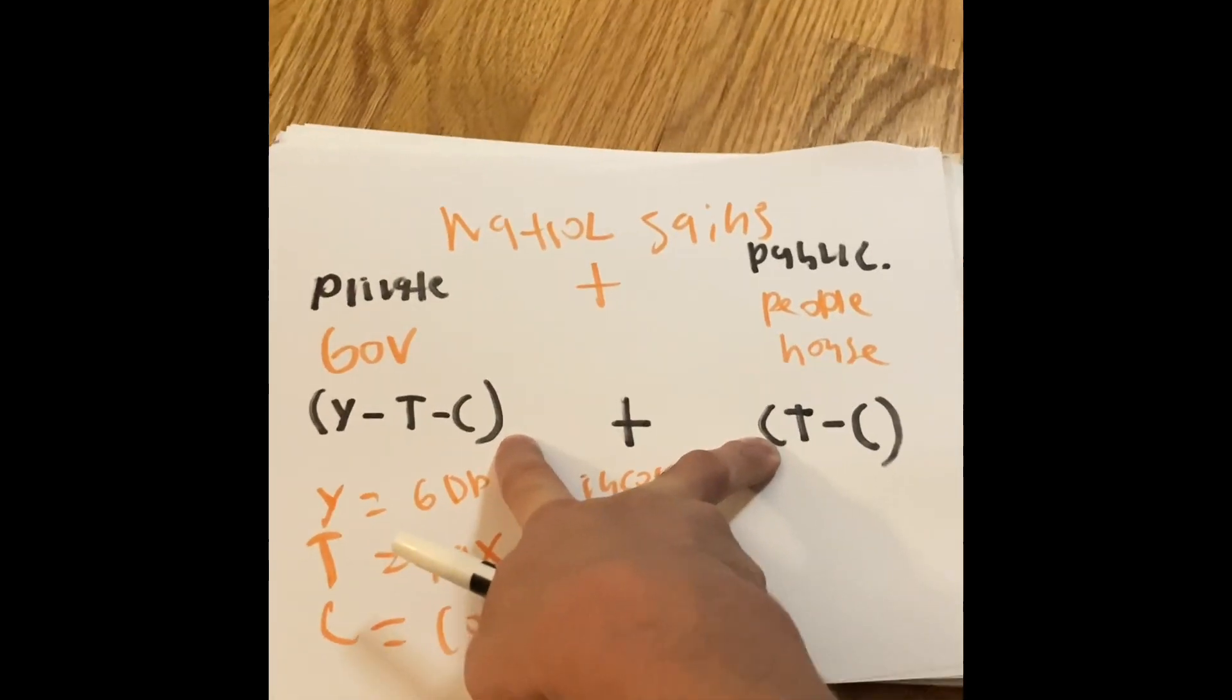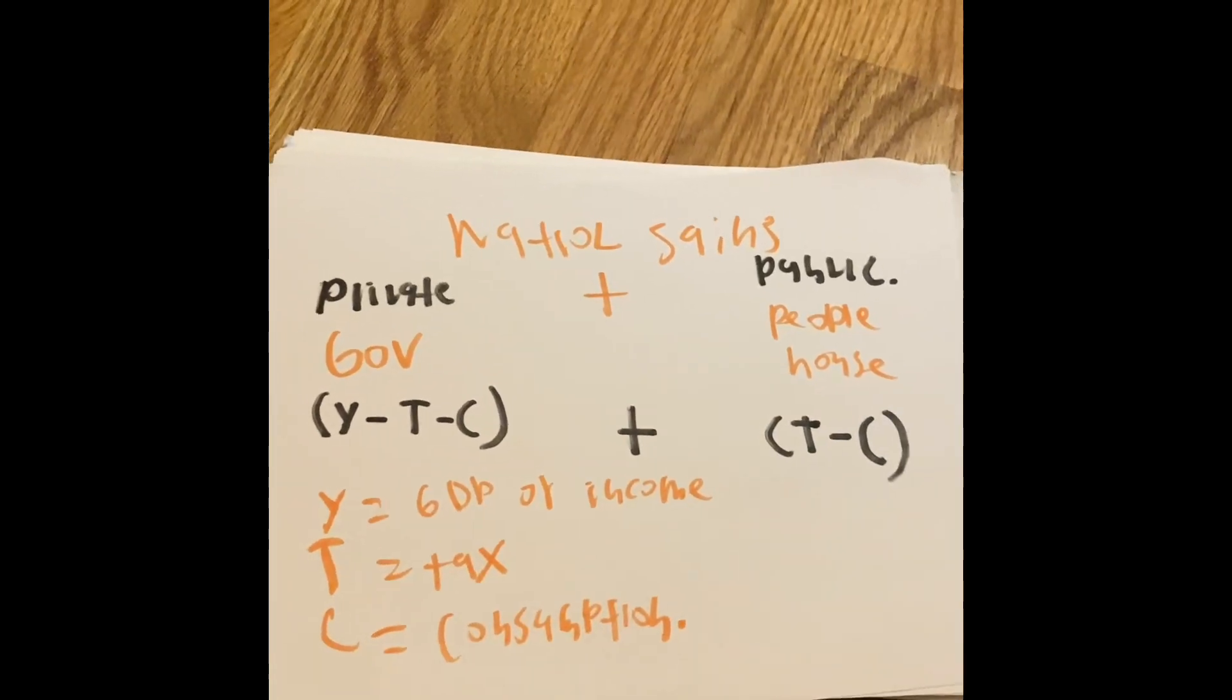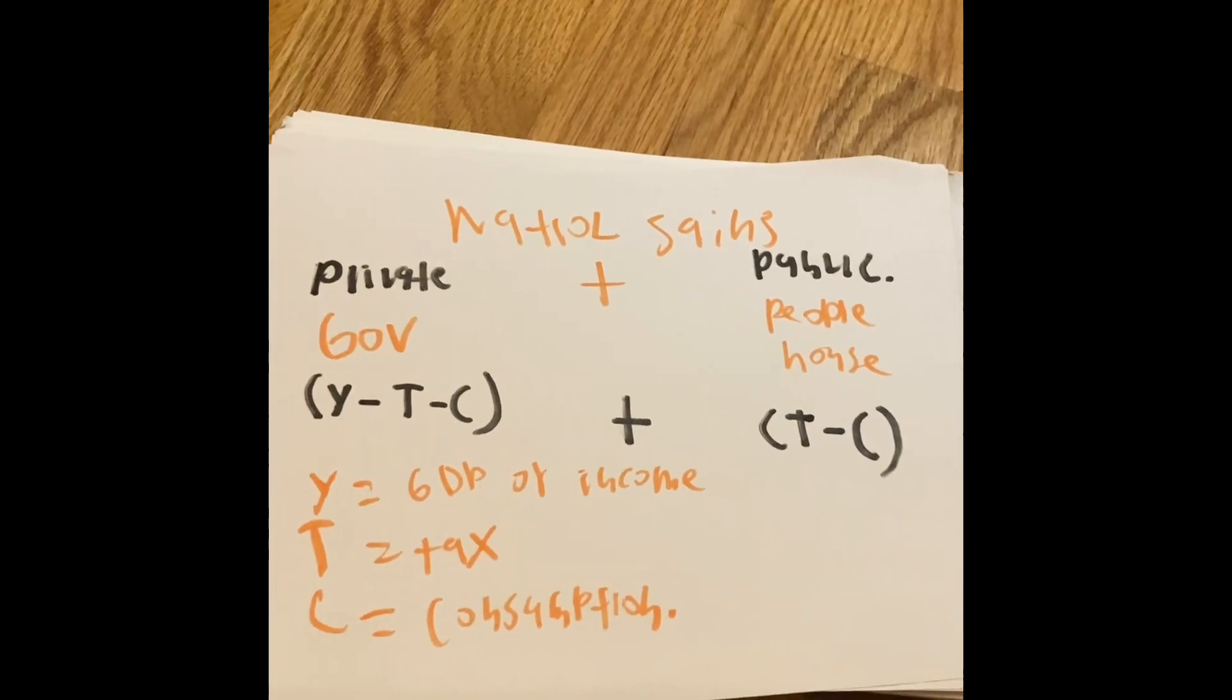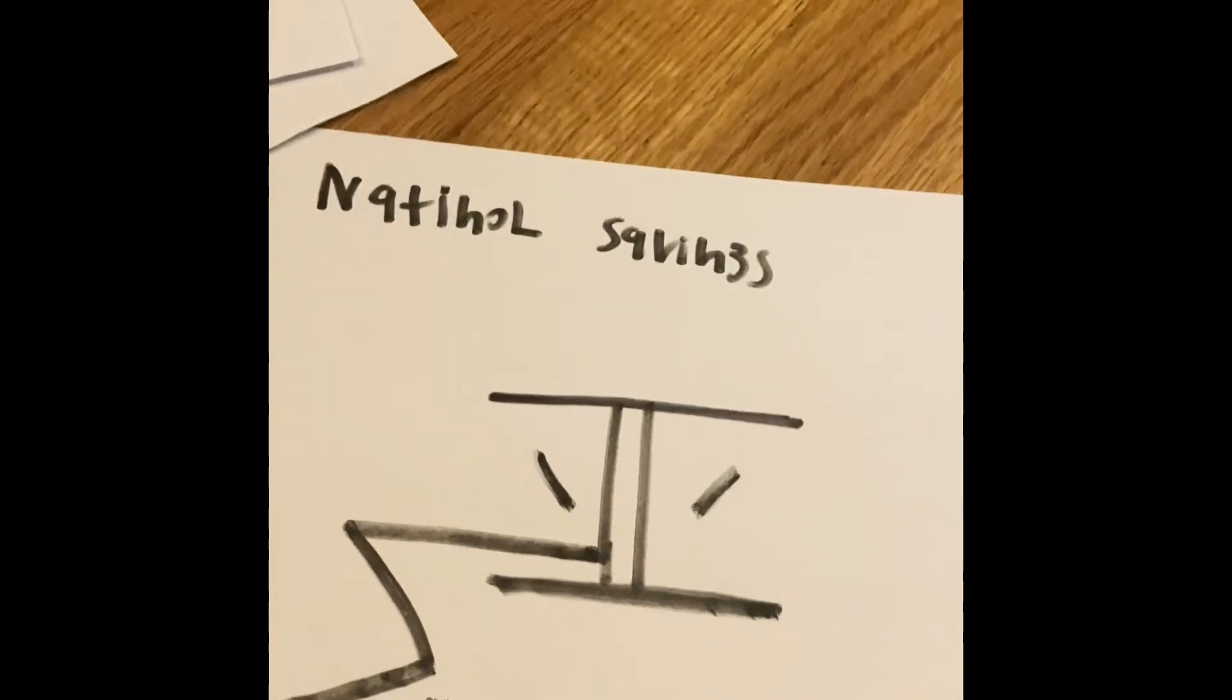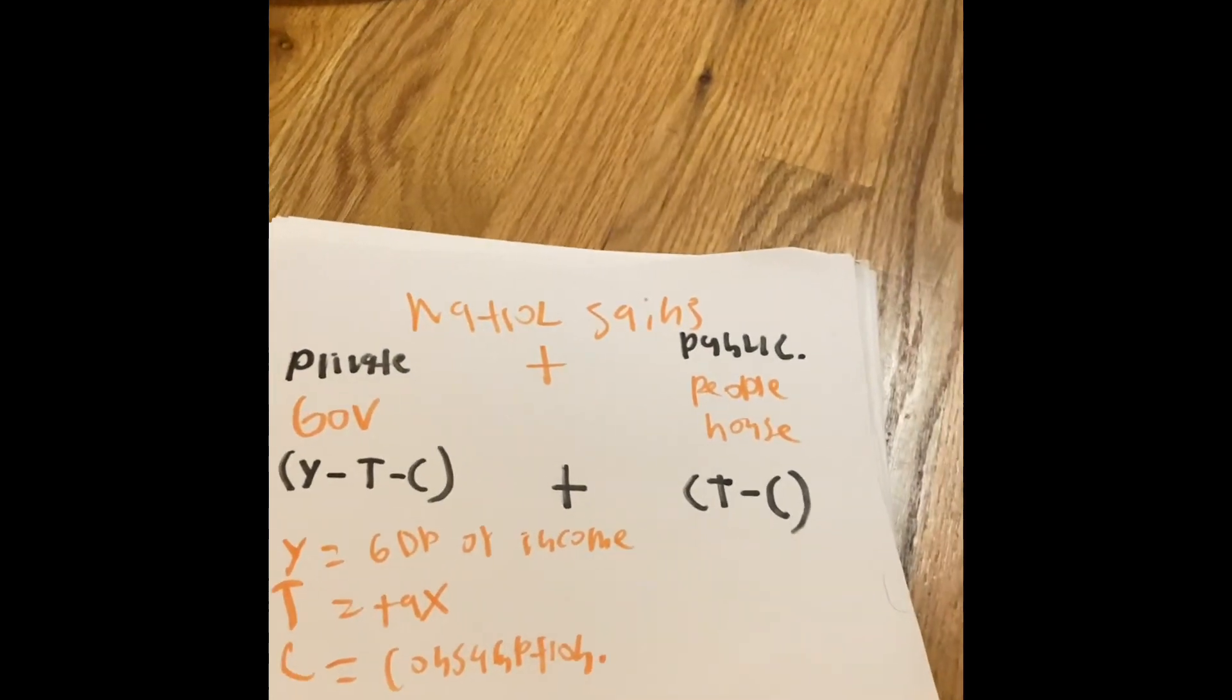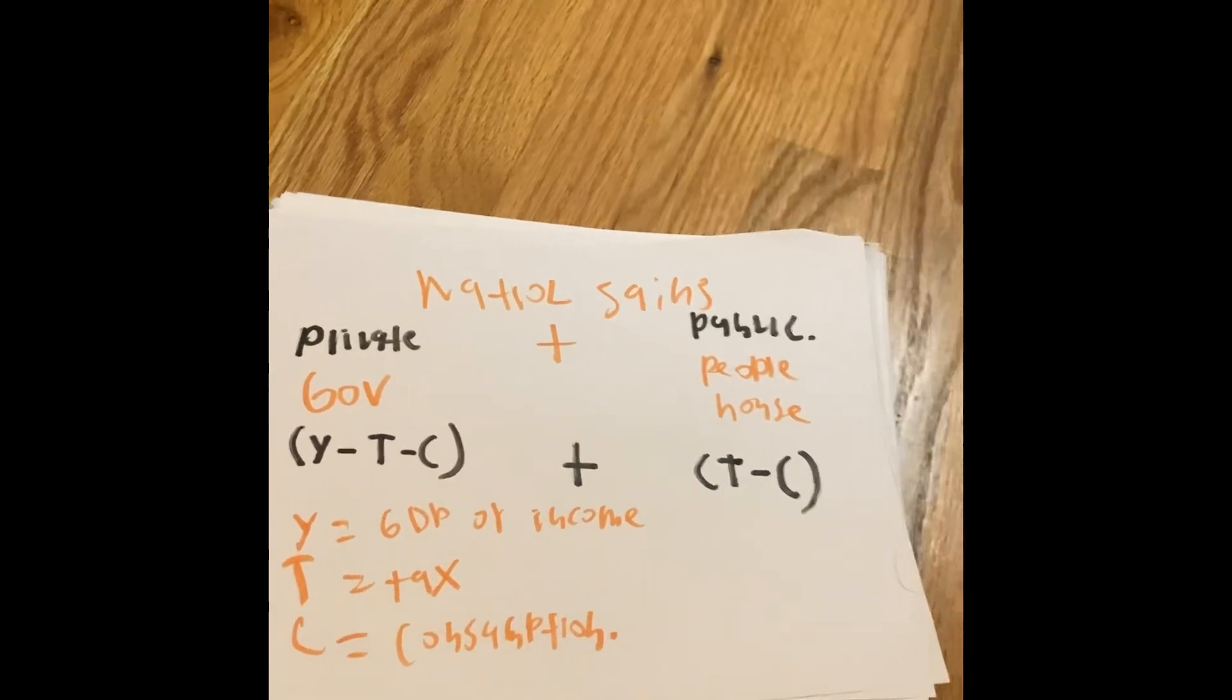So what we just understood right there is the difference between private and public savings and how they contribute to the country's national savings. But not only that, why is tax in there? Why do we have to talk about tax? And why does it have to be an economics?